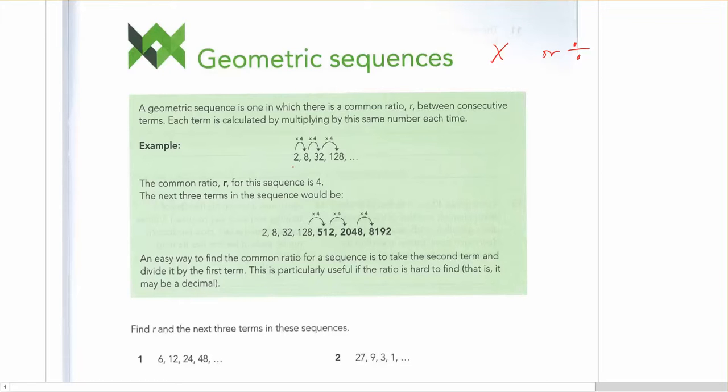For instance, if we look at the first example, if we have 2, 8, 32, 128, what's happening here is that to go from one term to the next, I'm multiplying by 4 each time. So what we have here is our common ratio r is equal to 4, because we're multiplying by 4 each time.